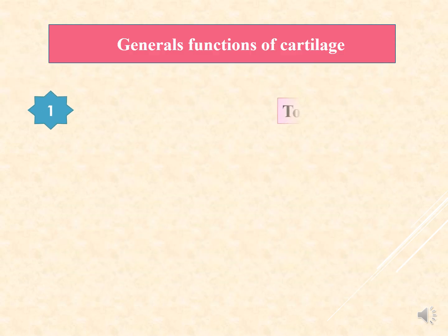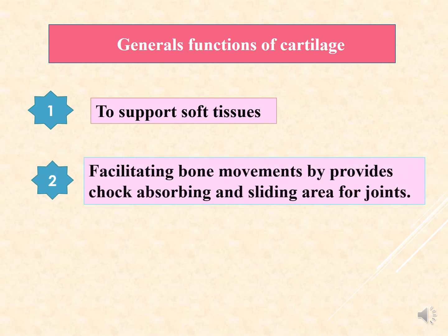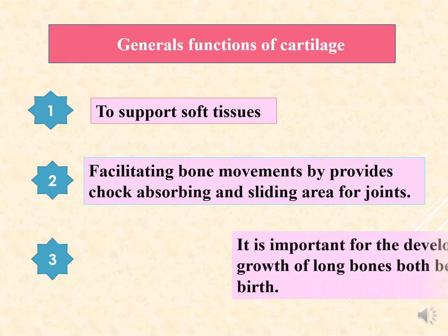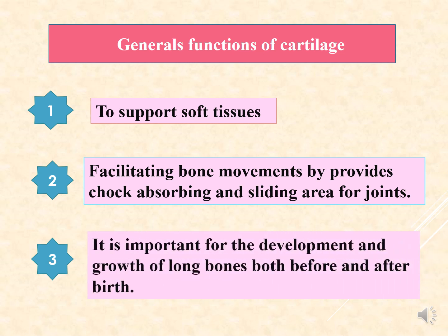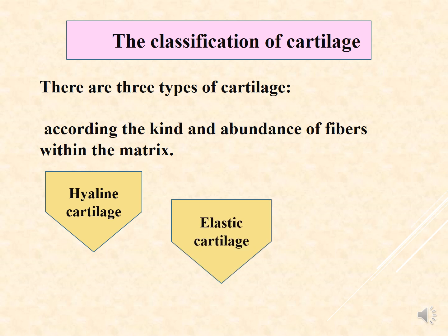The general functions of cartilage include: to support soft tissue, to facilitate bone movement by providing shock-absorbing and sliding areas for joints, and it is important for the development and growth of long bones both before and after birth. There are three types of cartilage classified according to the kind and abundance of fibers within the matrix: hyaline cartilage, elastic cartilage, and fibrocartilage.